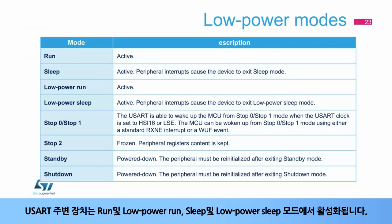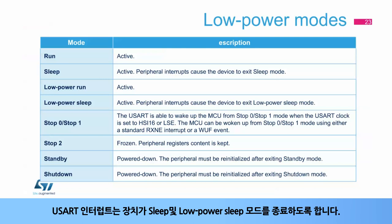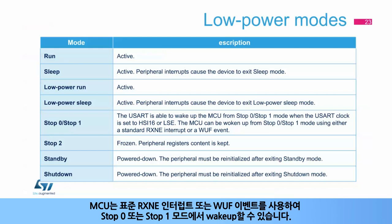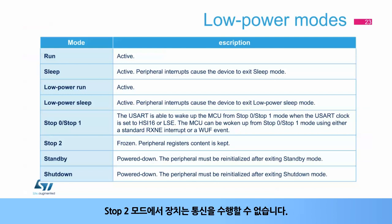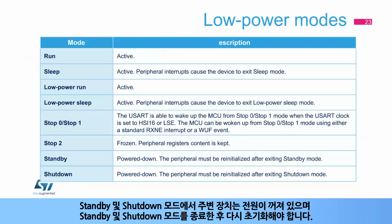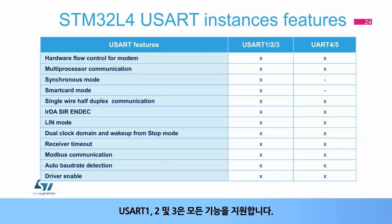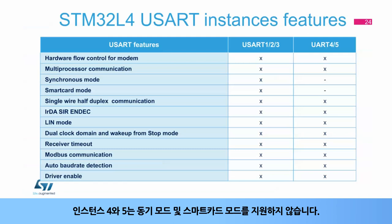The USART peripheral is active in run and low-power run, sleep, and low-power sleep modes. USART interrupts cause the device to exit sleep or low-power sleep modes. The USART is able to wake up the MCU from stop 0 or stop 1 mode when the USART clock is set to HSI-16 or LSE. The MCU can be awakened using either a standard RXNE interrupt or a WUF event. In stop 2 mode, the device is not able to perform any communication. In standby and shutdown modes, the peripheral is in power-down and must be re-initialized after exiting. The STM32L4 devices embed 5 instances: USART 1, 2, and 3 have a full set of features, while instances 4 and 5 do not support synchronous and smart card modes.